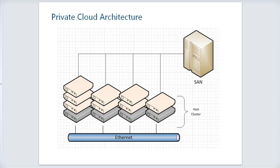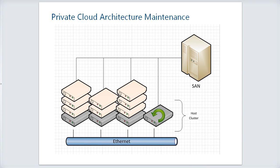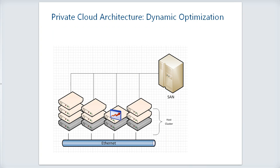In a private cloud setup with a host cluster and virtual machines running on hosts, if you need to reboot or patch one of those servers, you simply move the virtual machine from one host to another, reboot that machine, and then put the VM back. System Center can help automate that process.